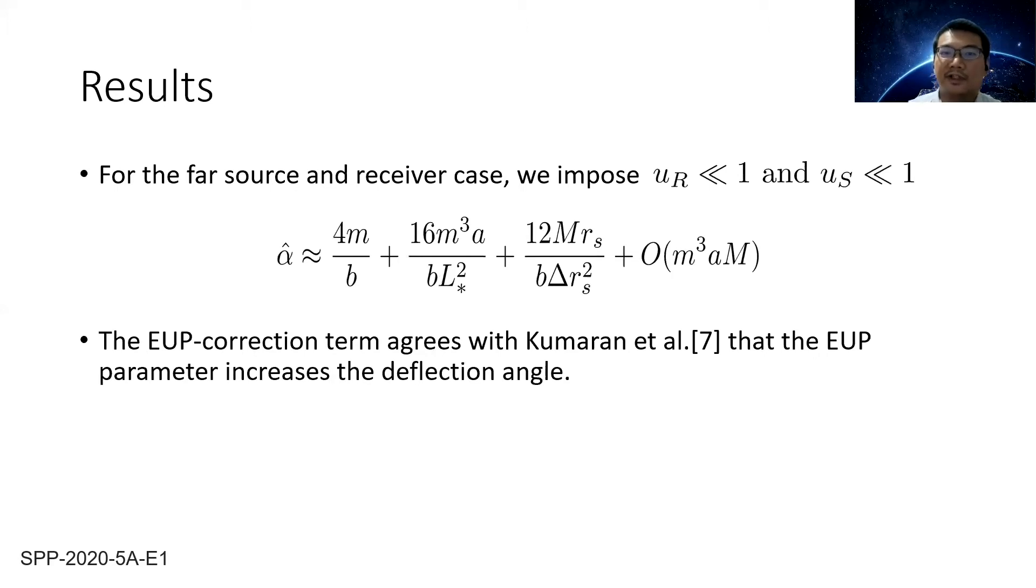For the far source and receiver case, we impose U_r << 1 and U_s << 1, which shows that the receiver and the source are very far away from the black hole, and we got the approximated deflection angle.